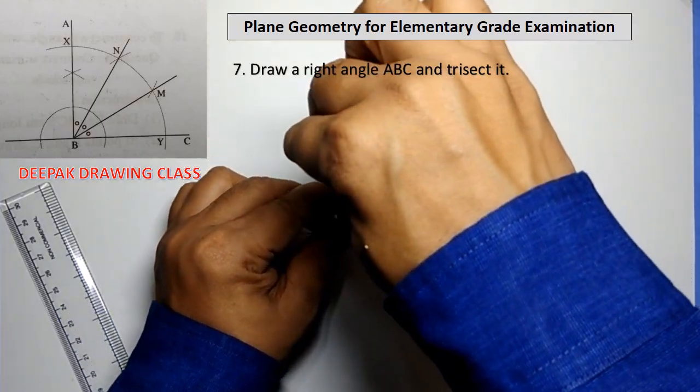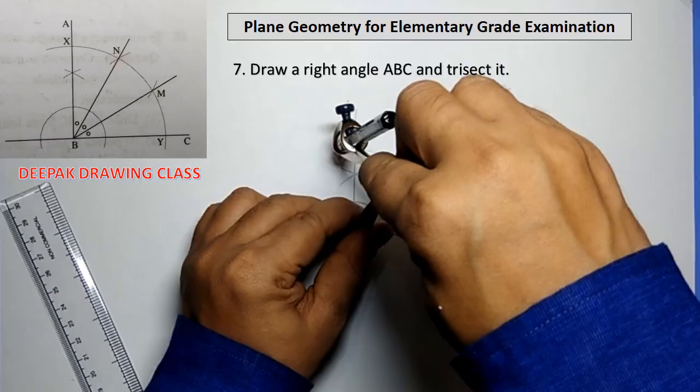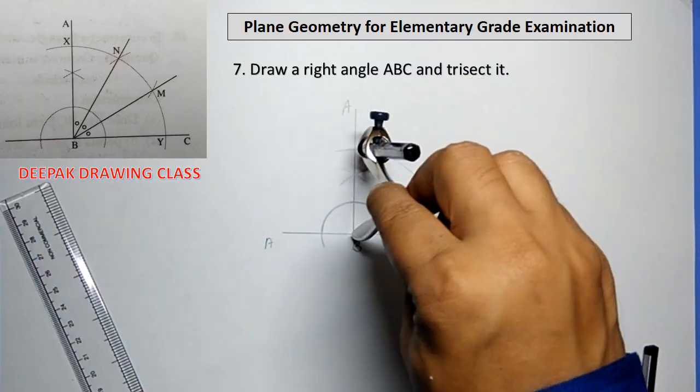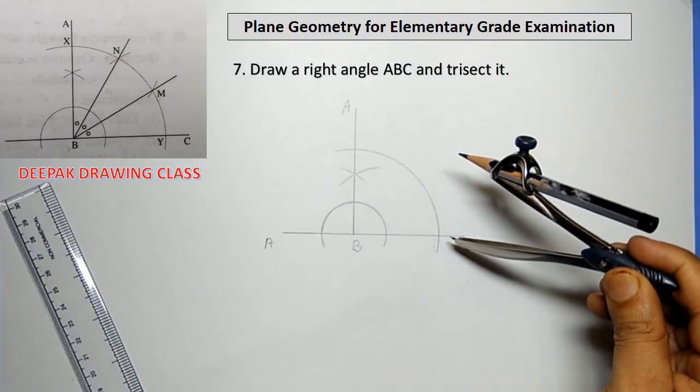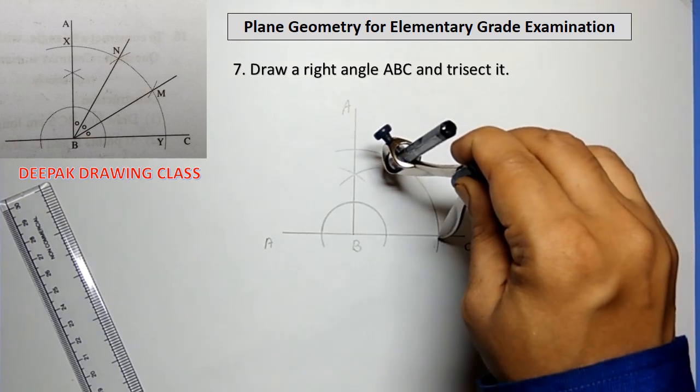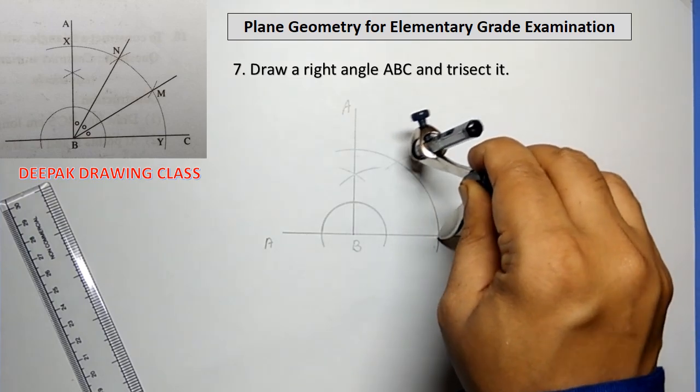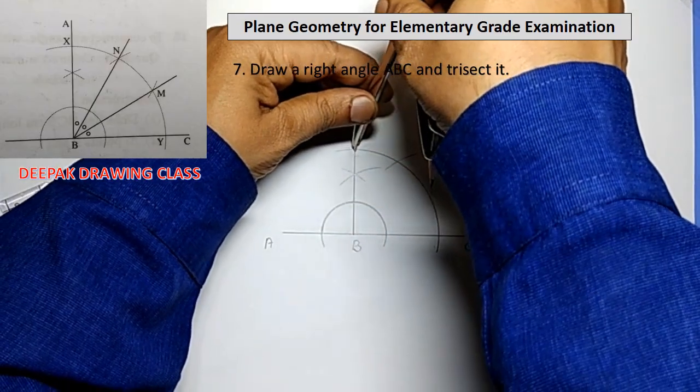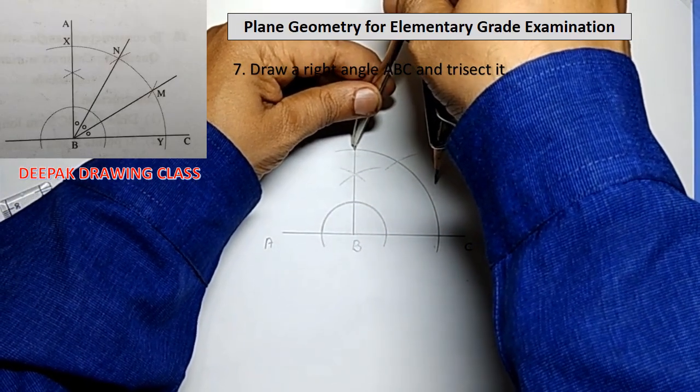with center B and radius slightly larger than half of line BC, draw an arc intersecting both of its arms at points X and Y. With the same radius and center Y, draw an arc intersecting arc YX at point N.